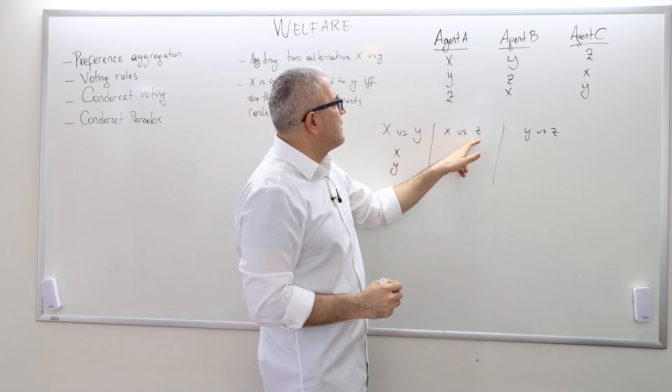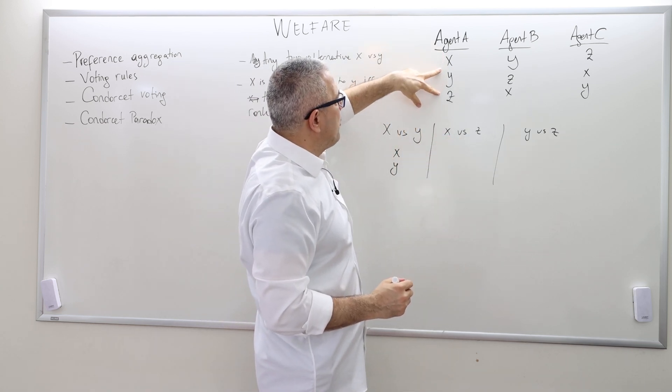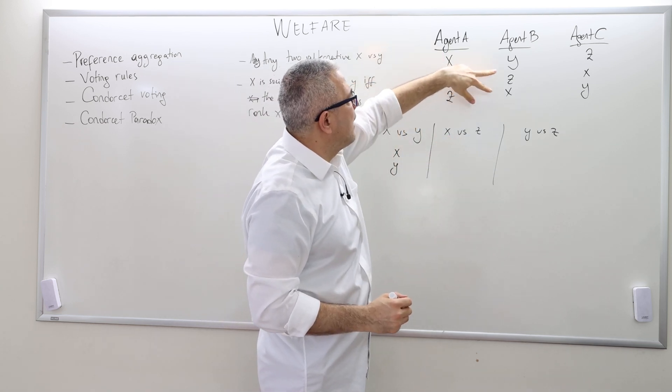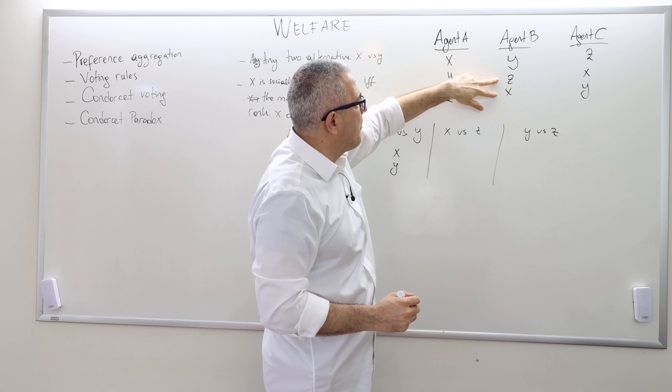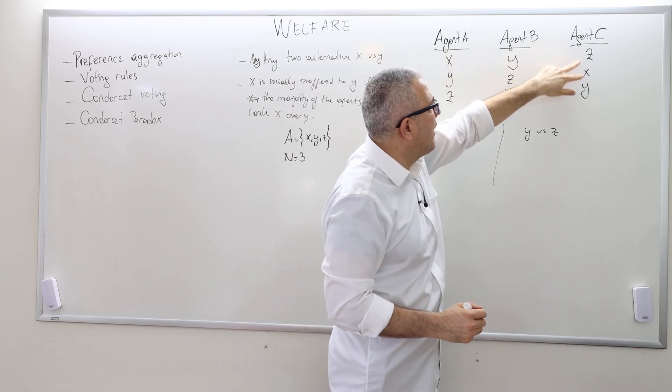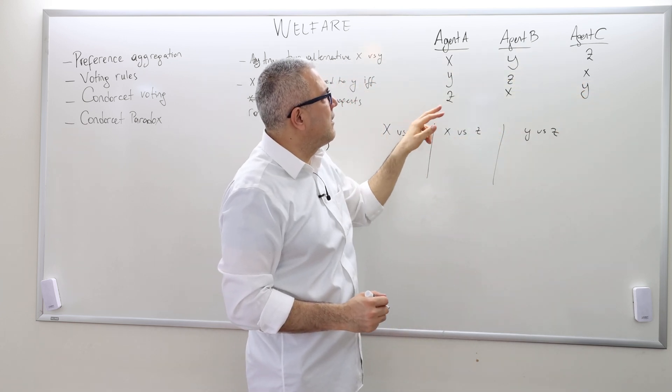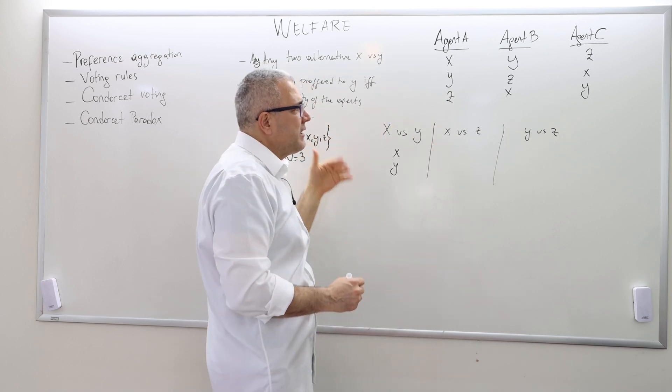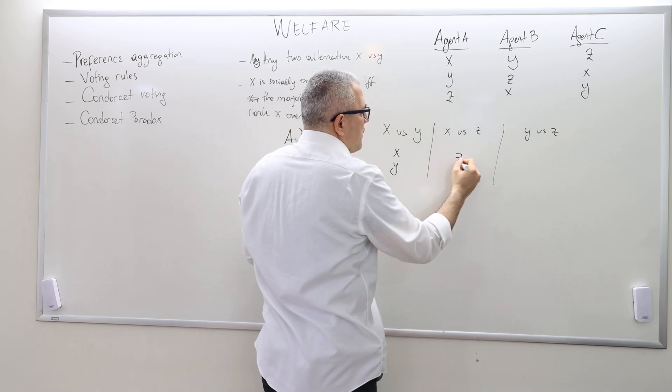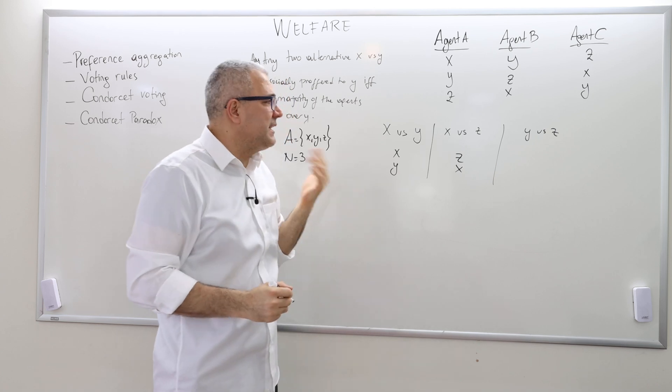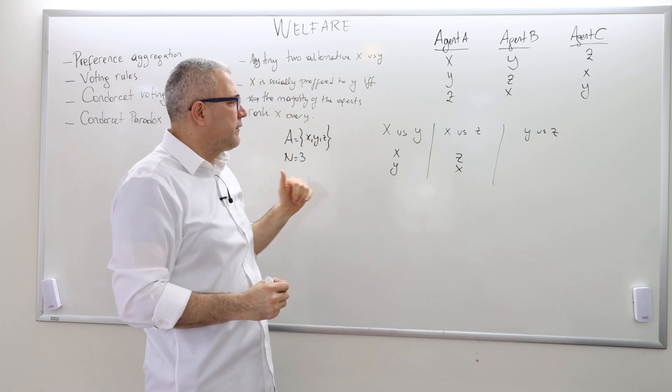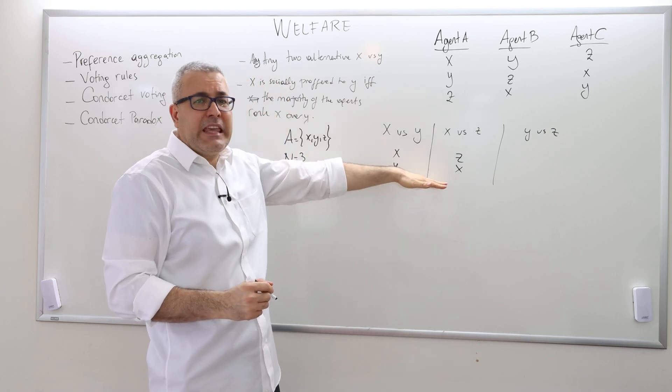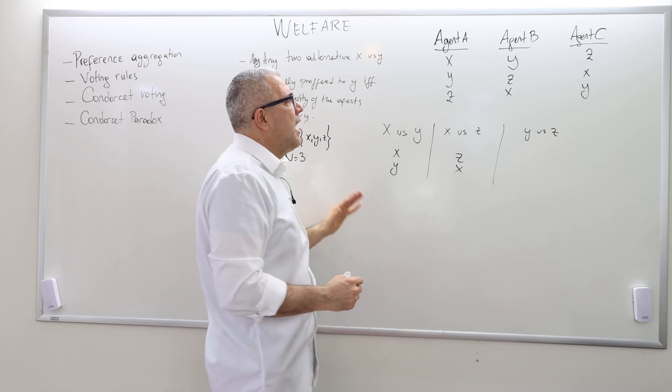What about X versus Z? So A puts X above Z. B does the opposite, and same as agent C. So two of the agents, B and C, rank Z better than X. So therefore, the majority says Z is better than X. So therefore, the social ranking should be as such.